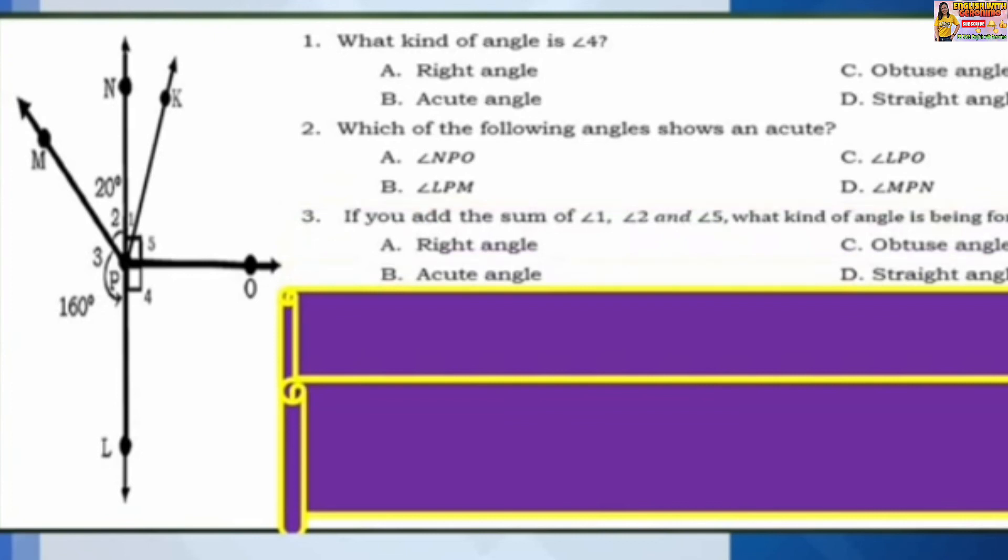Number 3: If you add the sum of angle 2 and angle 5, what kind of angle is being formed? A: Right angle. B: Acute angle. C: Obtuse angle. D: Straight angle.